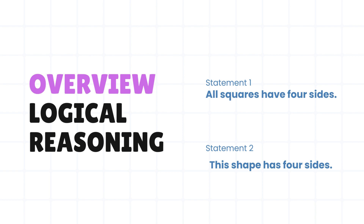Okay, all squares have four sides. Statement two: this shape has four sides. This shape has four sides, so statement one — this shape has four sides.